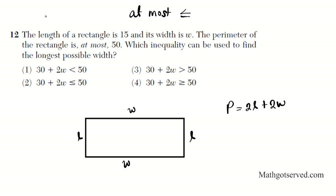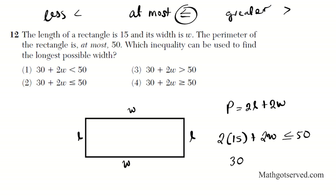So this is the inequality we're using, less than or equal to. I know with this inequality, you can already see that the answer is option 2, but let's work out the whole problem. The perimeter is 2 times the length, which is 2 times 15, plus double the width. It has to be at most 50, so it's less than or equal to 50. So the answer is option 2.